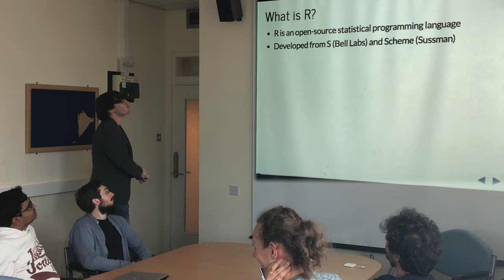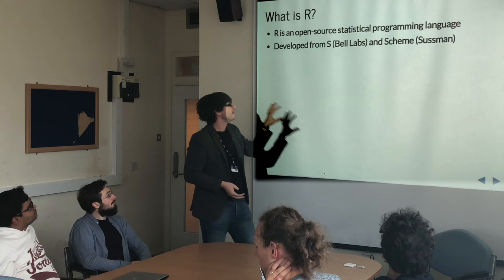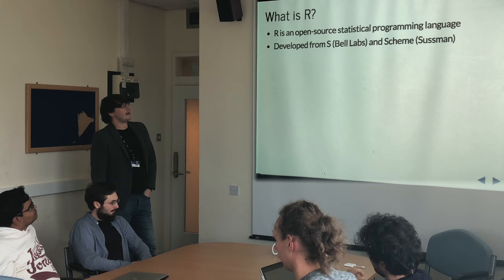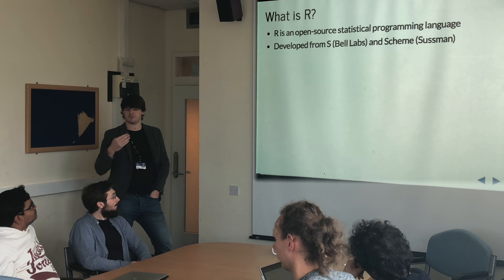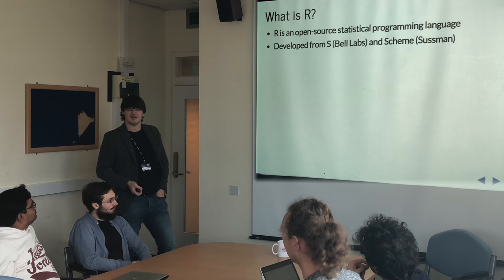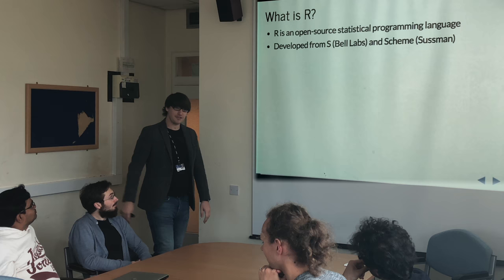And they still managed to sneak objects in there, but we'll gloss over that in a minute. R is an open-source statistical programming language which came out of S, which came out of the Bell Labs in the 70s, and Scheme, which came out of MIT around the same time. S was essentially the same language but proprietary. Then a couple of guys in New Zealand decided it wasn't that complicated, wrote R, released it open source, and S died a very slow death.